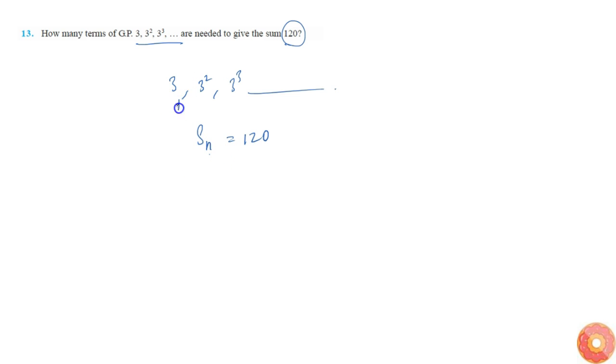From this we get a is equal to 3 and ar is equal to 3², so that means r is equal to 3 where a is equal to 3. So now we get Sn, we can write as...